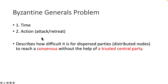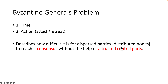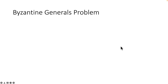There are two things they need to coordinate: time and action. To win the battle, at least more than half of the generals must do the same thing at the same time. This problem describes how difficult it is for a dispersed party — or distributed nodes — to reach a consensus without the help of a trusted central party.